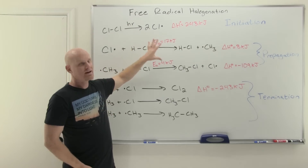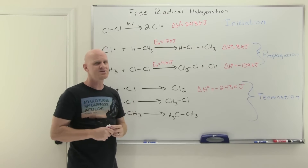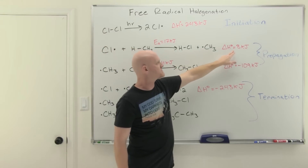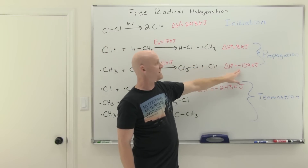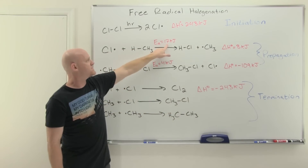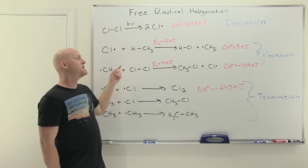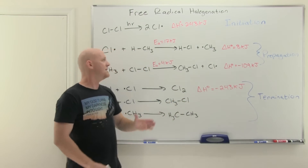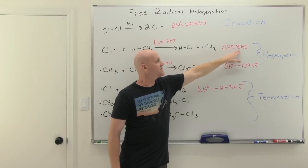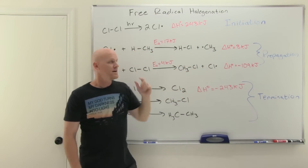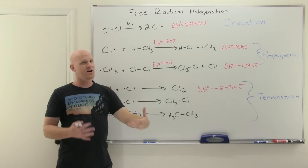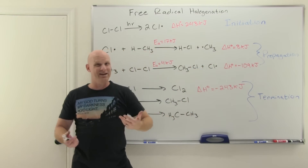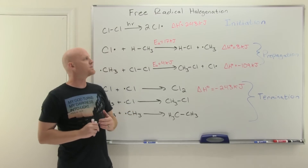Let's go back and focus on the propagation steps, because here's how we explain why bromination is so much more selective than chlorination. It really comes down to that first propagation step. Looking at the two propagation steps: one's slightly endothermic and one's fairly exothermic. The activation energy for the first one is 17 kJ, and for the second it's 4 kJ. The second one is faster and exothermic - energetically favorable. But the first propagation step, for chlorination, is just a little bit endothermic - and depending on the C-H bond broken, it can be slightly endothermic or slightly exothermic.